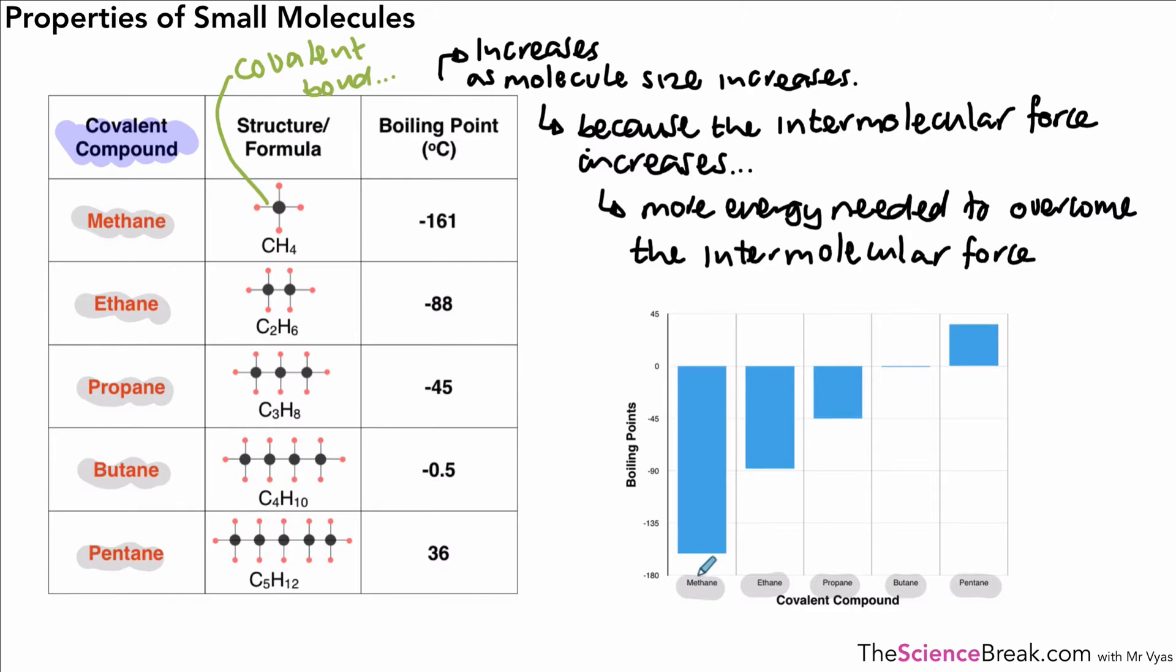And as you can see, the bar graph shows that the methane, the smaller molecules, have a low boiling point. That's supposed to say BP for boiling point. And at the other end, the pentane has a higher boiling point because the molecules are bigger and for the reasons we've explained above.